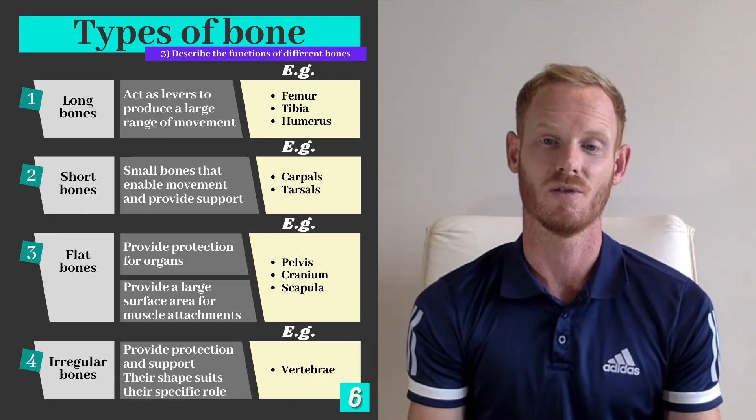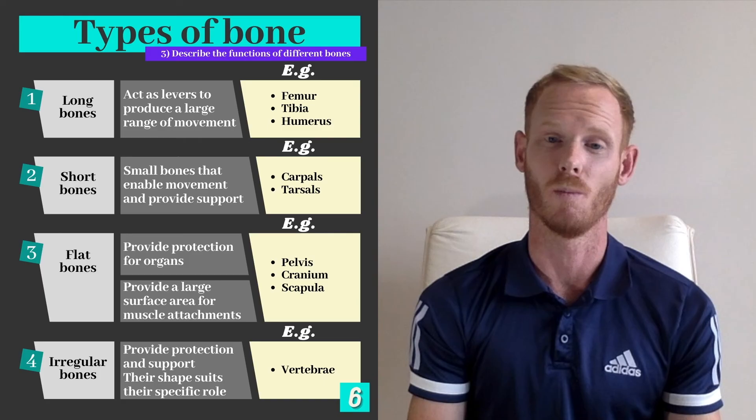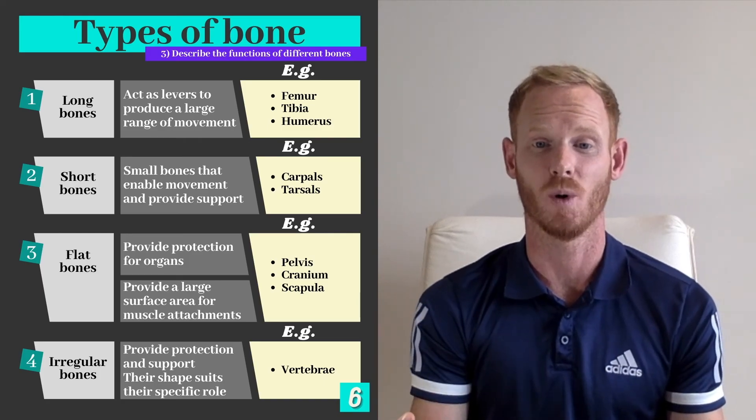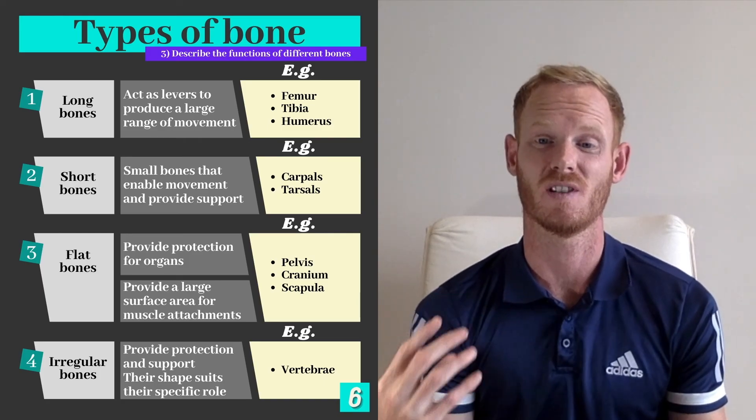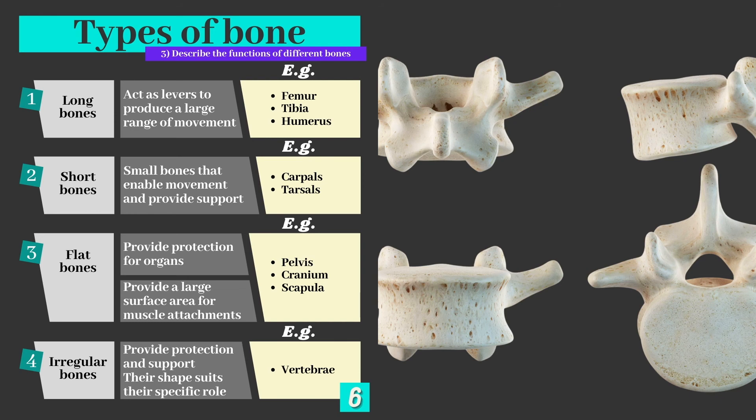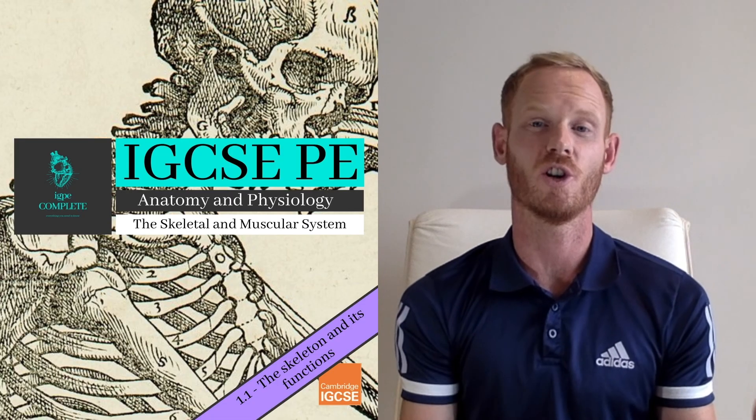Finally, we have irregular bones and these aren't very common within the human body. They provide protection and support and their shape suits their specific function. Vertebrae are a great example. They're shaped so that they can protect the spinal cord which runs within the spine and they also allow a small range of movement in many directions.